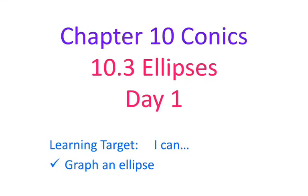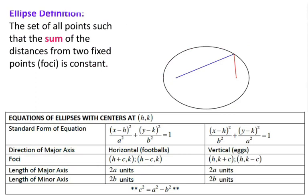Hi guys, here's your video going over ellipses day one. After you are done watching this video, you should be able to graph an ellipse. Just like with parabolas, your ellipse has an official definition. Here is your definition of the ellipse: it is the set of all points such that the sum of the distances from two fixed points remains constant. Your two fixed points — each one of them is a focus, and since we have two of them, the plural of focus is foci.